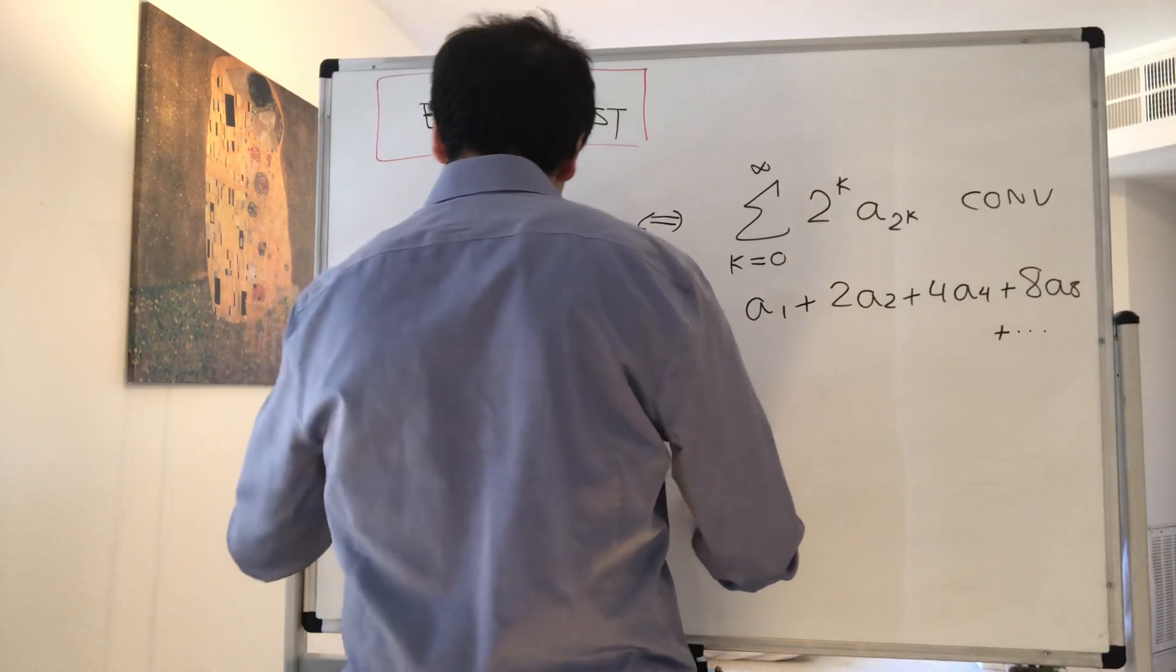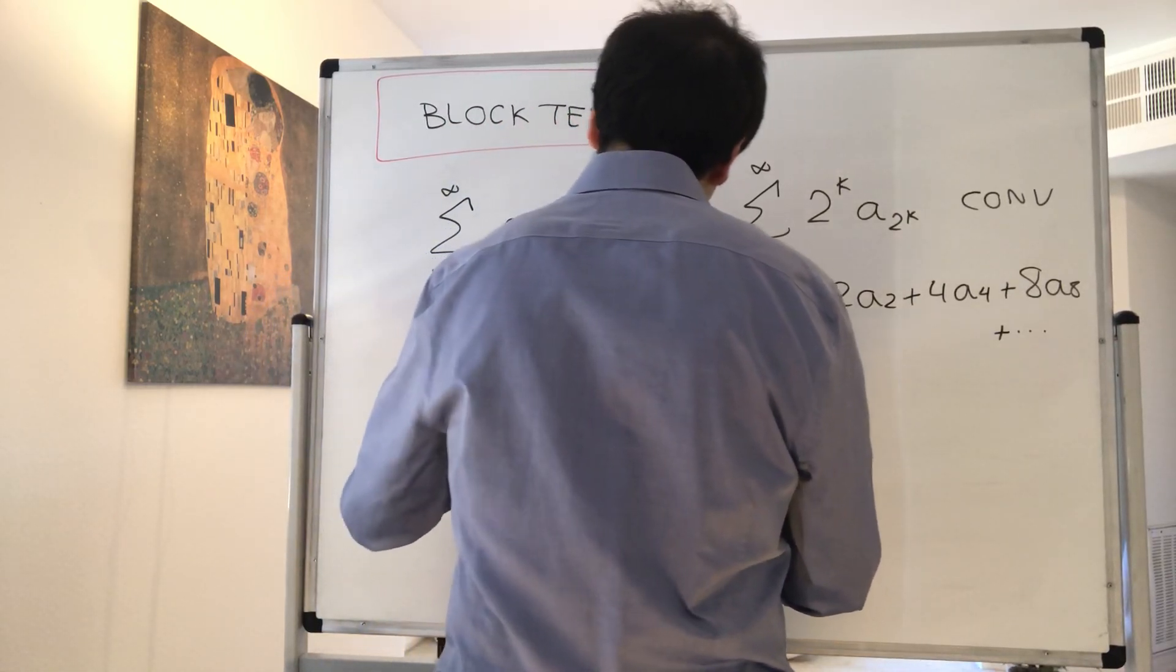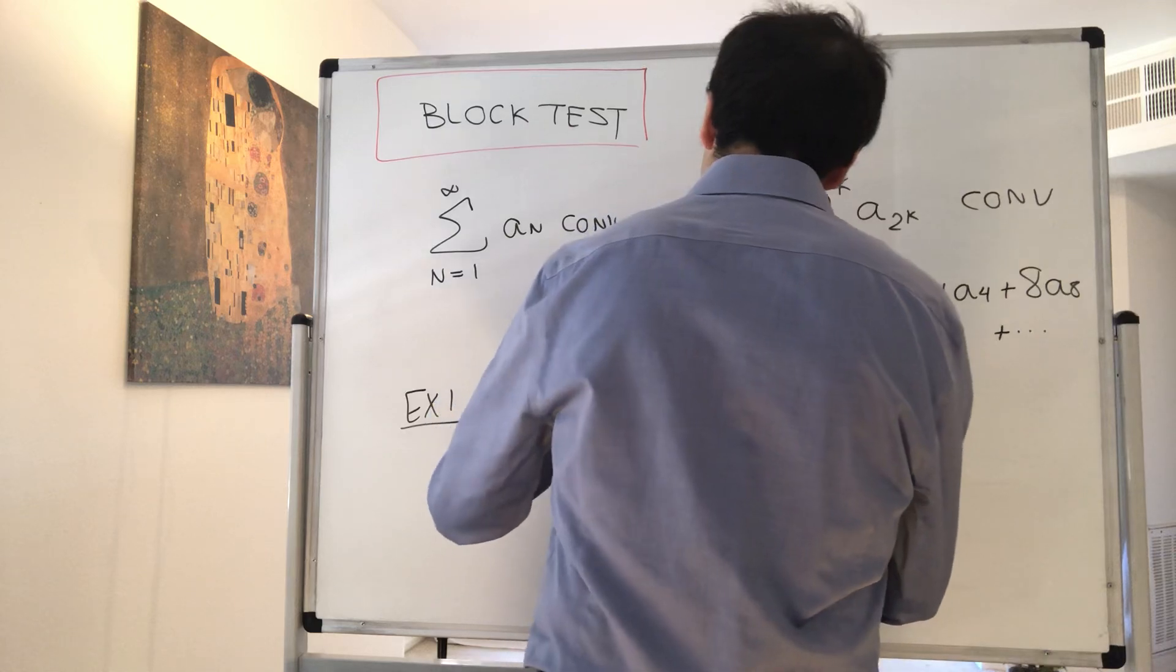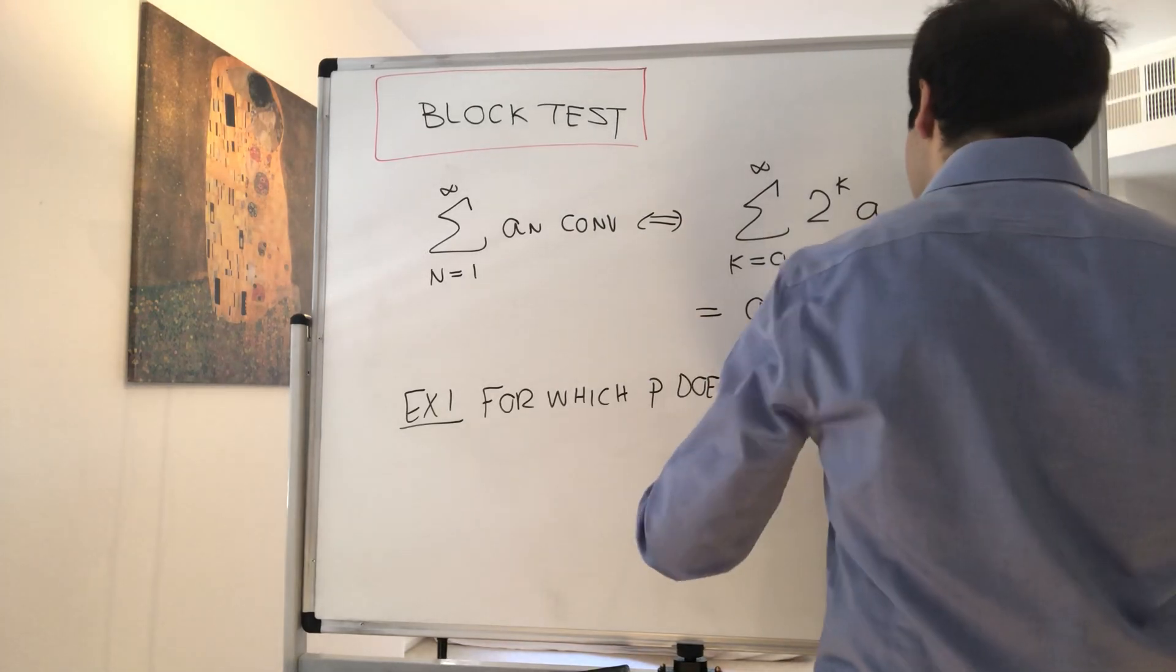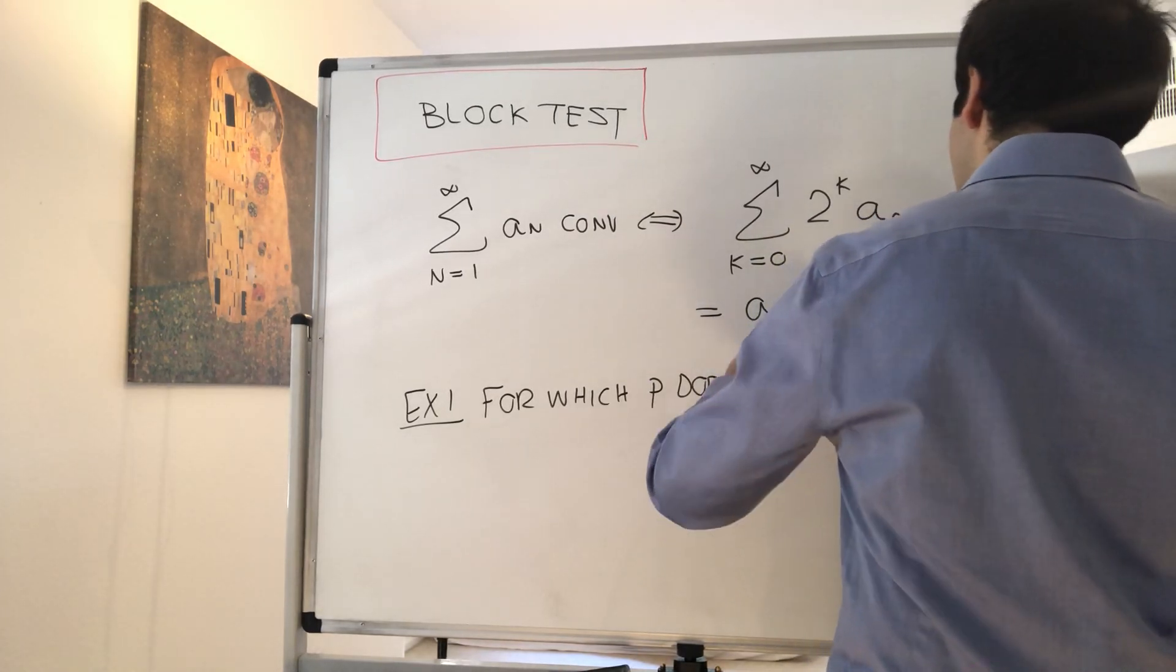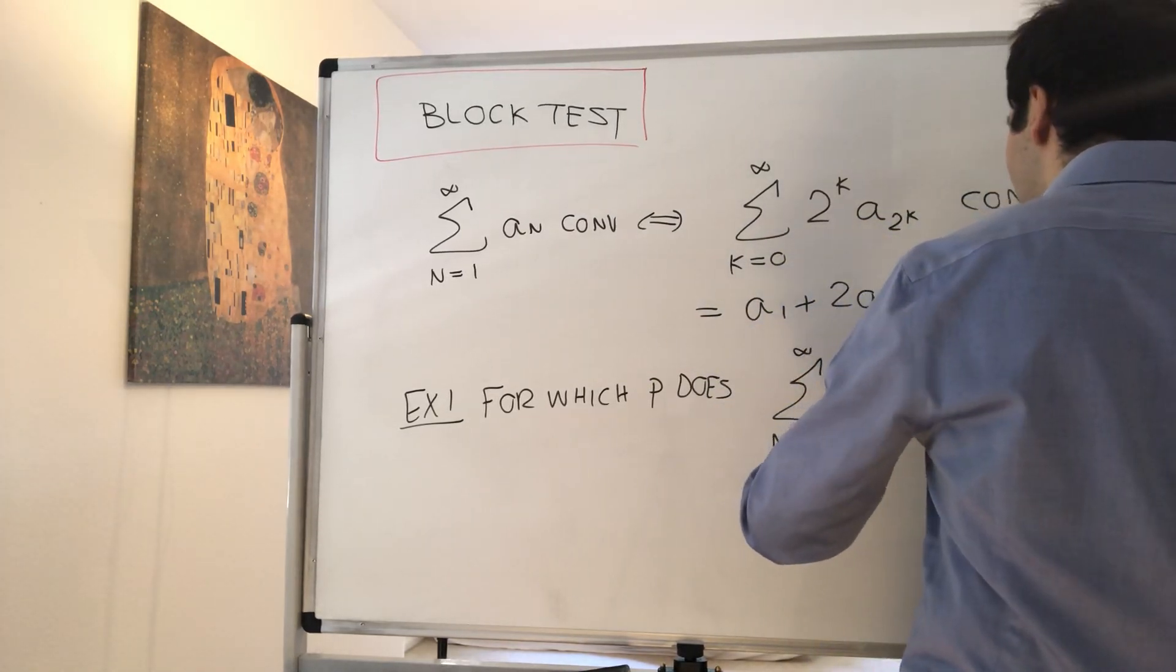So, example one, for which p does the following series converge: the sum from n equals 1 to infinity of 1 over n^p.